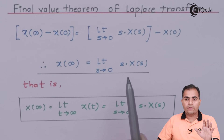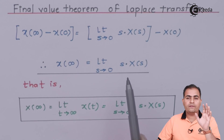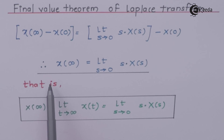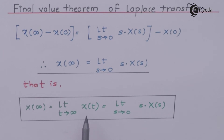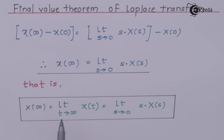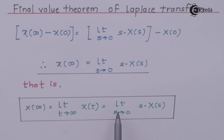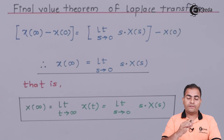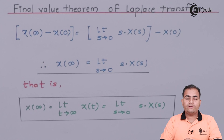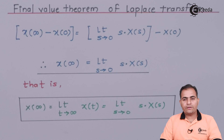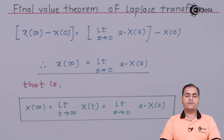x(∞) can be treated as limit t→∞ of x(t). So we can replace x(∞) with limit t→∞ x(t), and the result is limit s→0 of s·X(s). This completes the proof of the final value theorem. Thank you for watching this video.